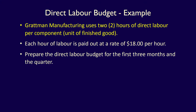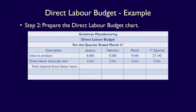The next row is the amount of direct labour hours needed per unit, which we get from the question. Each component produced requires two hours of direct labour, so we enter two hours in row two for every month and the first quarter — they all use the same amount: two hours.